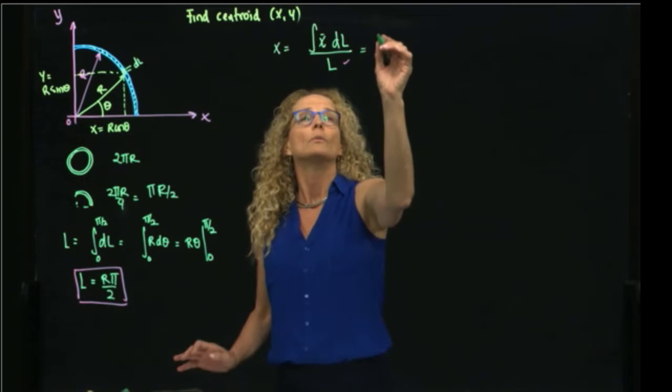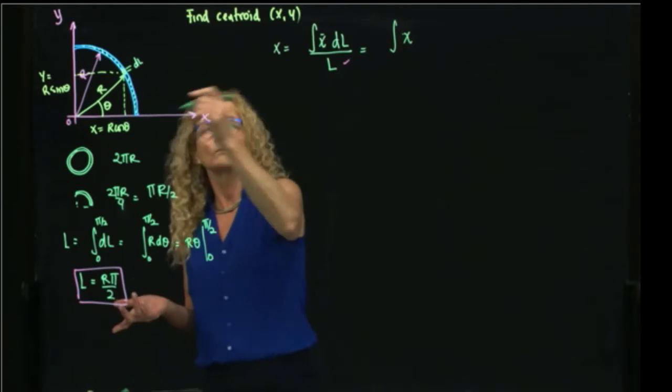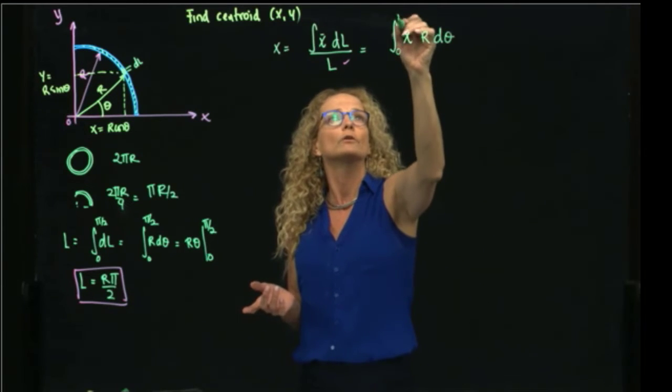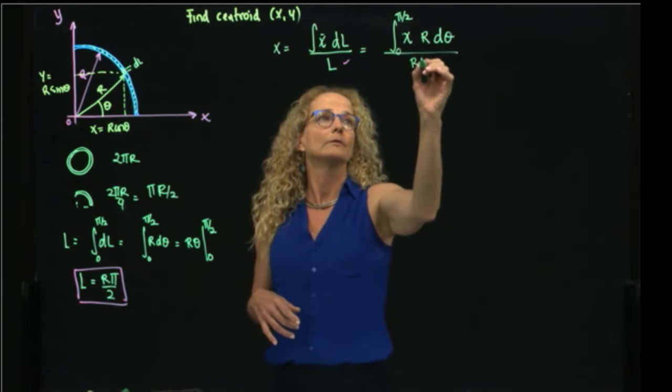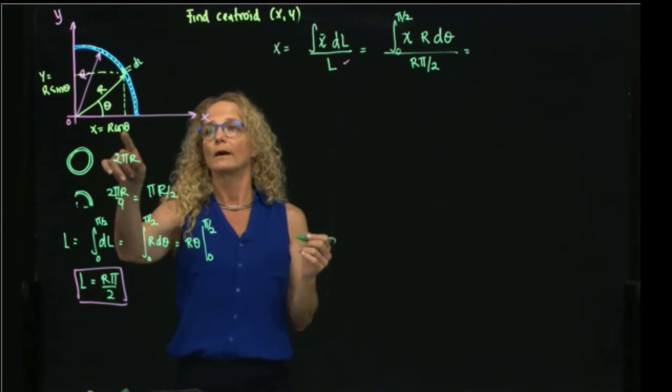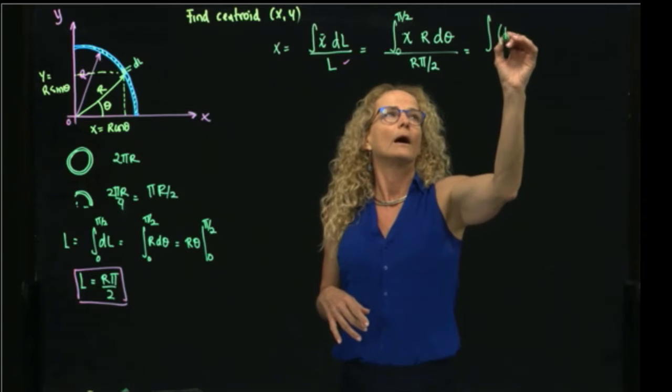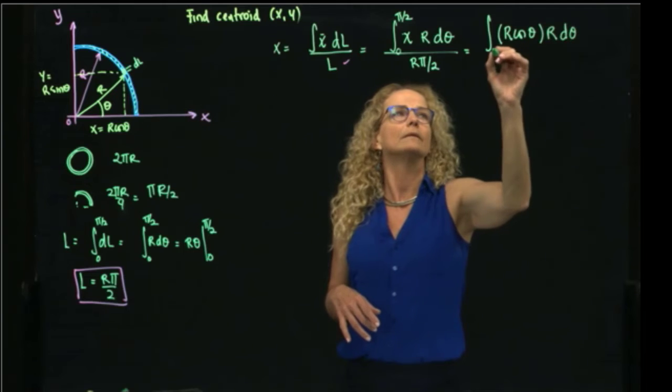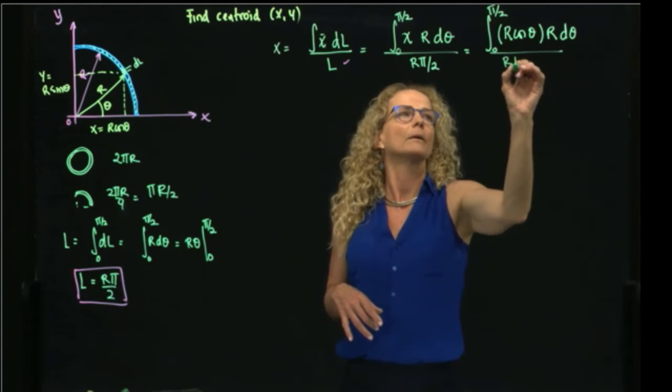So we can write this then, that's x, and differential of line, we can write it as r dθ from 0 to π/2, divided by the length, and we know that is π r over 2, right? And we can write x in terms of r and theta, which is then r cosine of theta times r dθ from 0 to π/2, divided by r π/2.